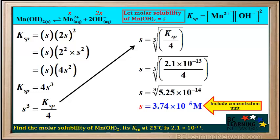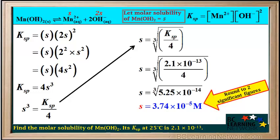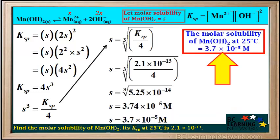Because S is a molar concentration, we have to include the unit molar. And because the original Ksp given had two significant figures, we round our answer to two significant figures. So the final answer is: the molar solubility of Mn(OH)₂ at 25 degrees is equal to 3.7 × 10⁻⁵ molar.